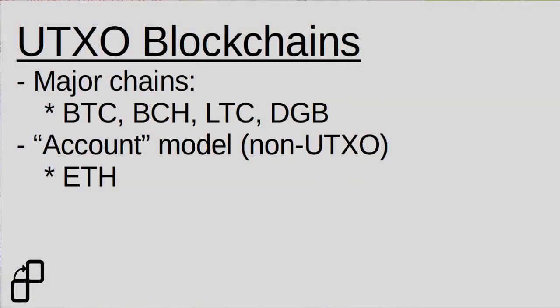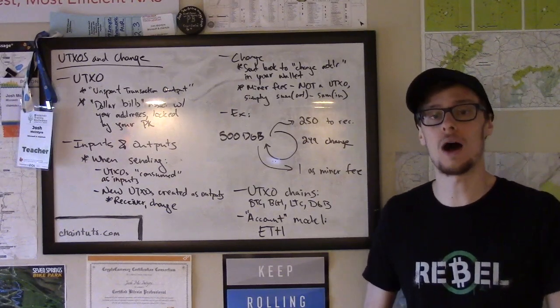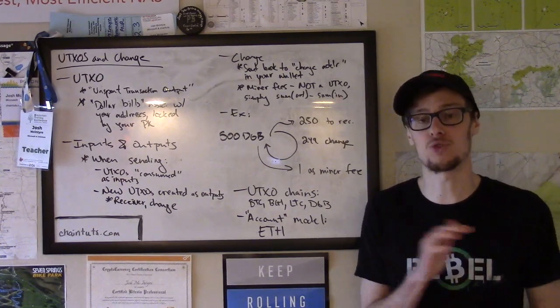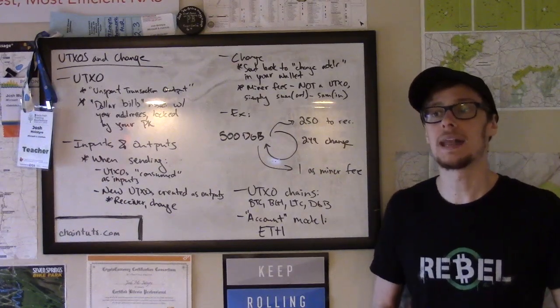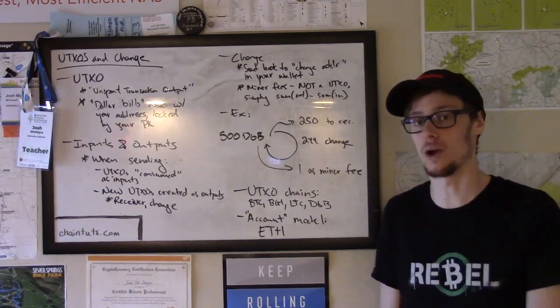This works the exact same way on Bitcoin, Bitcoin Cash, Litecoin, and other blockchains that use this UTXO model. A notable outlier among popular cryptocurrencies is Ethereum. Ethereum actually uses an account model, which is much more akin to what you're used to with your bank account. The Ethereum blockchain keeps track of state changes in the form of withdrawals and deposits from an account, and tracks the overall balance rather than keeping a set of unspent transaction outputs associated with addresses.